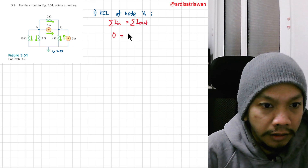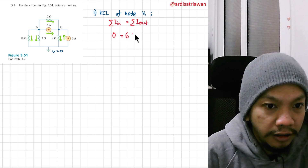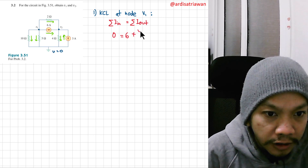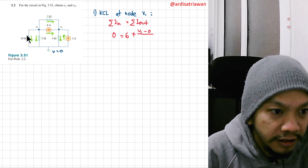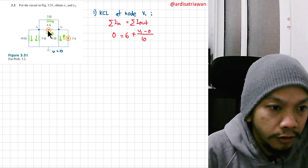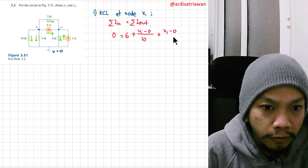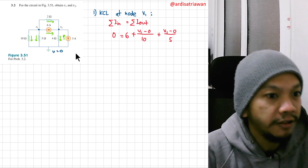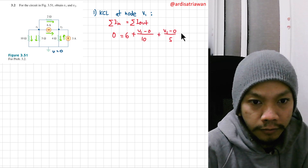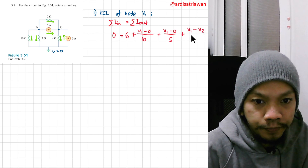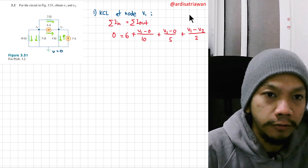For the currents going out: first is the 6 ampere current source, so I put 6. Then this current here — V1 minus zero divided by the resistance, which is 10 ohms, so divided by 10. For this one, V1 minus zero divided by 5. And we still have one more: V1 minus V2 divided by the resistance between them, which is 2 ohms.